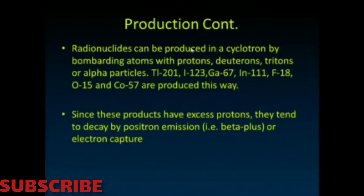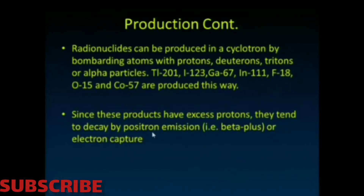We can also produce radionuclides via cyclotron by bombarding atoms with protons, deuterons, or alpha particles. Thallium-201, gallium, indium, and fluorine-18 can be produced that way. Since these have excess protons, they tend to either decay by positron emission or by electron capture.